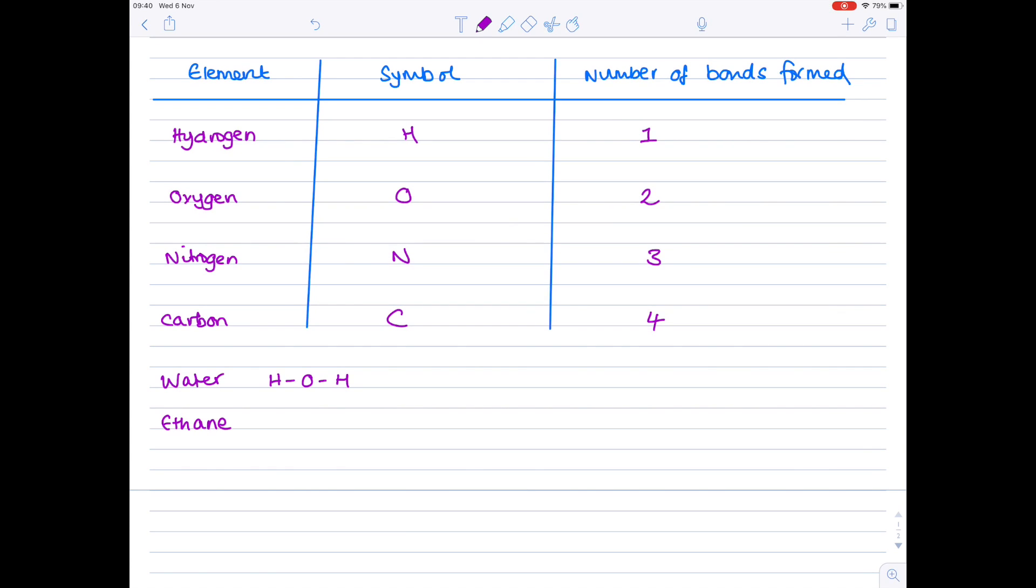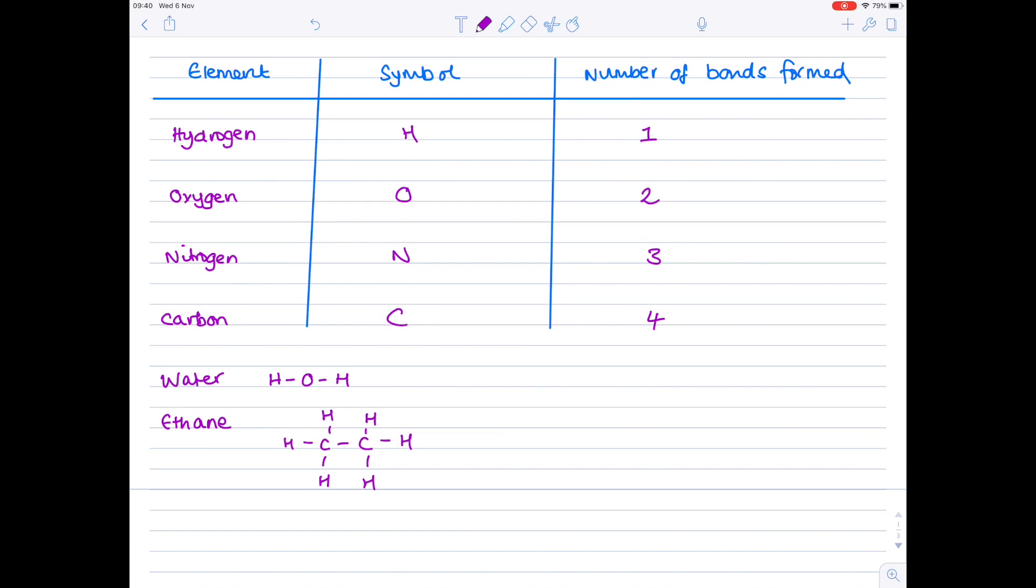Ethane. Draw on here. We can see here that each carbon atom has formed four bonds, according to our table. And each hydrogen atom has formed one bond.